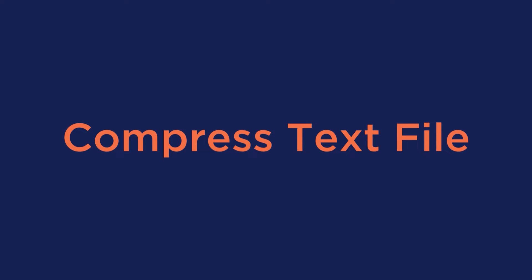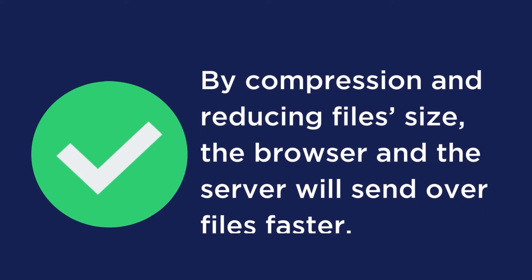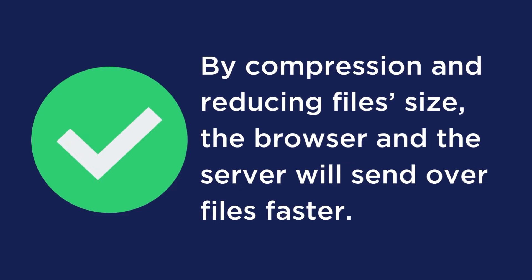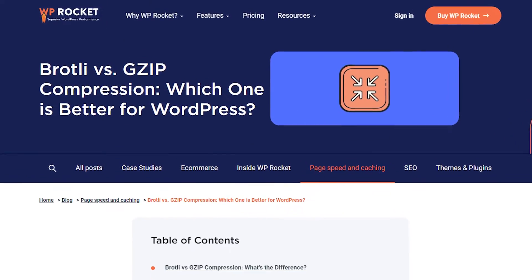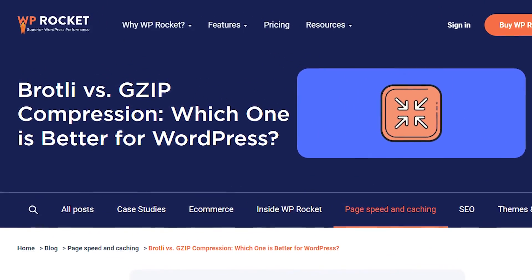Next is to compress text files. Compression is definitely something you need to take care of, and enabling text compression is one of the PSI recommendations that also applies to FID times. By using compression and reducing file sizes, the browser and server will send files over faster. The most common compression formats are gzip and Brotli, and Brotli is the most recommended format right now. You can read more in our dedicated article linked in the description. The easiest way to enable gzip compression on WordPress is by using a plugin — our plugin includes gzip compression by default.